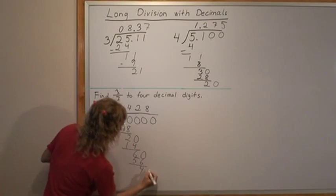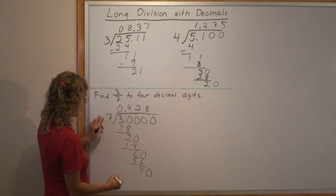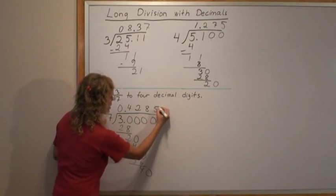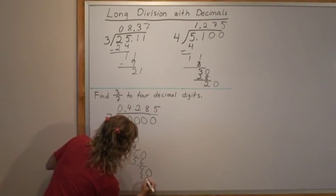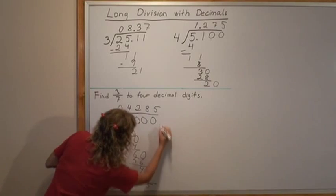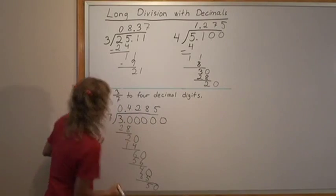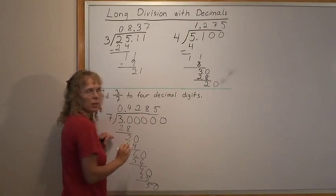Now I need to add more zeros there. And 7 goes into 40, 5 times. Then we get more zeros. Now I have my 4 decimals.